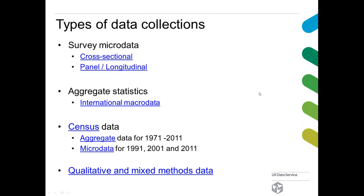What kind of data do we hold? A little bit of everything. This session is specifically about qualitative data, but just so you know, the majority of data — at least judging by number of collections — is quantitative. We hold over 6,000 collections, of which 5,000 are quantitative. There's survey data, both cross-sectional and longitudinal, aggregate statistics, domestic and international macro data, and census data. But I'll focus on qualitative data and related resources.